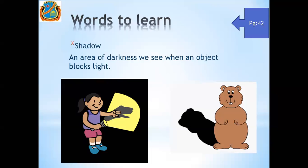Now you can see in this slide. There are two objects. One is this, and one is this girl who is making a shadow with a torch. You can see in this slide that this girl is holding a torch in her hand and she is blocking the light by putting her hand in front of the torch light. So you can see behind her, there is a shadow.